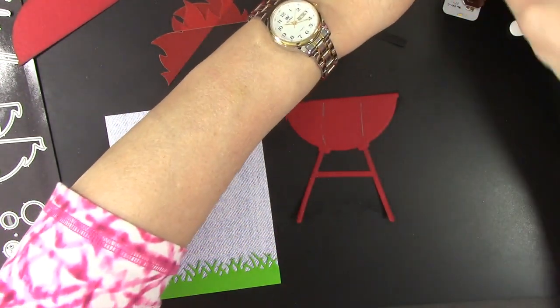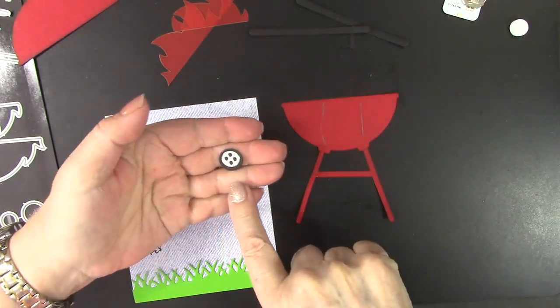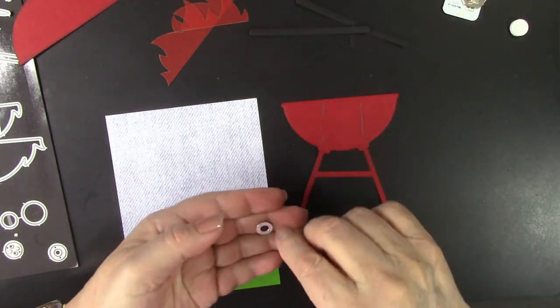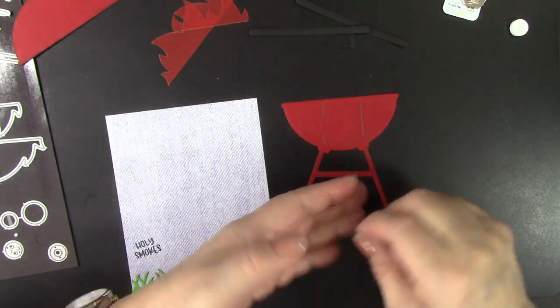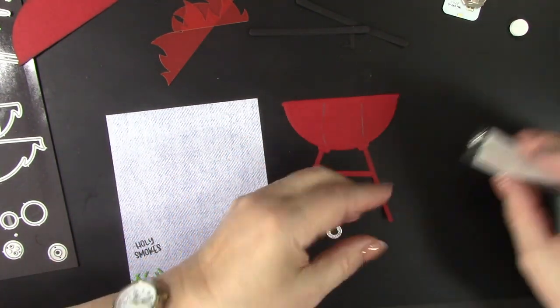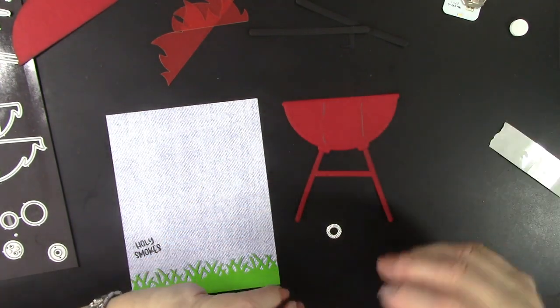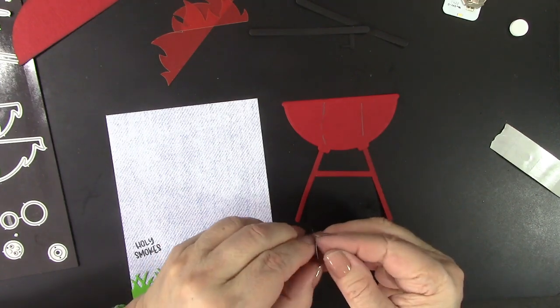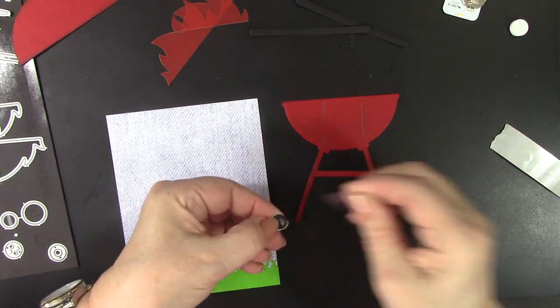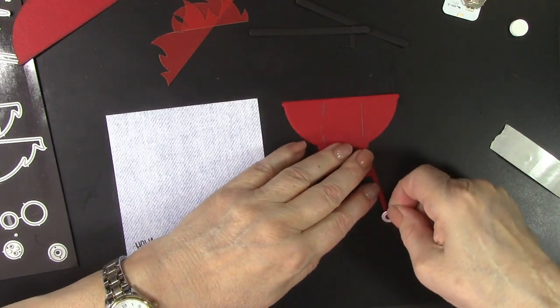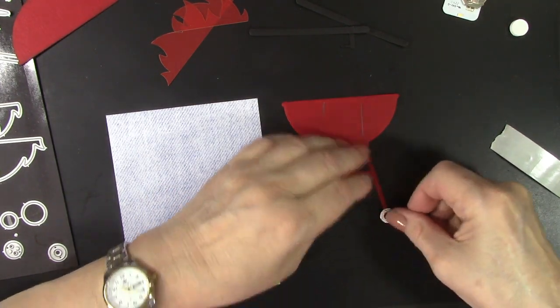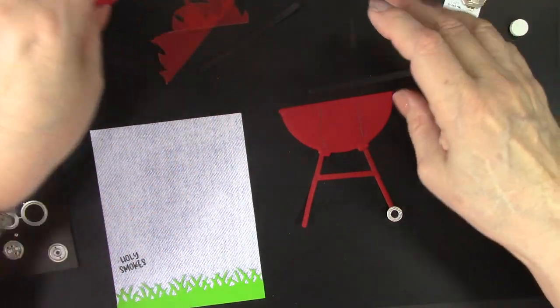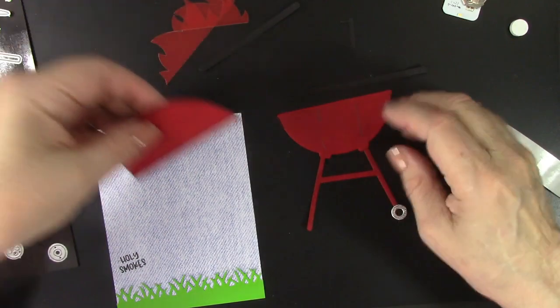And then this is going to get attached to where the legs go. And this is the vent. And then this is the leg stand, I guess you could say. So I'm going to put that on with a glue dot also.